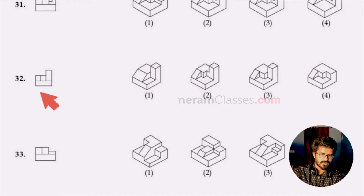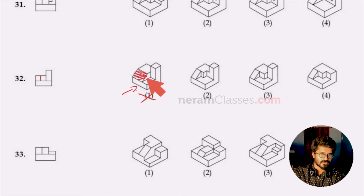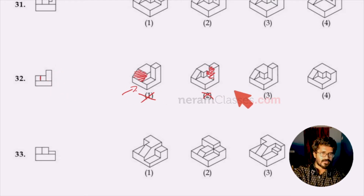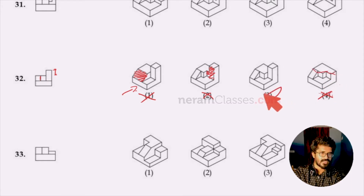For question 32, option one is wrong because we have a line here but it's a plane figure there. Option two is wrong because we have an L-shape here but only a rectangle in the option. Option four is also wrong because this rectangle is projected above the other two squares, but here all three are aligned at the same level. Option three is the right answer.